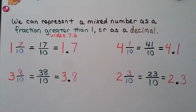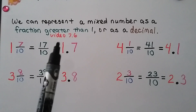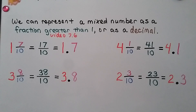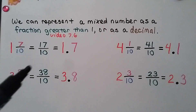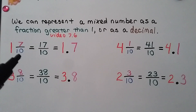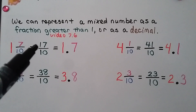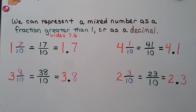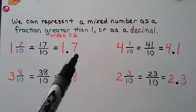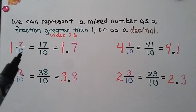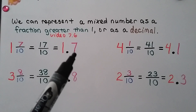We can represent a mixed number as a fraction greater than one. For one and seven-tenths, we multiply the whole number by the denominator — one times ten — then add the numerator: ten plus seven is seventeen. So one and seven-tenths equals seventeen-tenths. As a decimal, we put a one in the ones place, a decimal point, and a seven in the tenths place: 1.7. The tenths place value tells us the denominator.